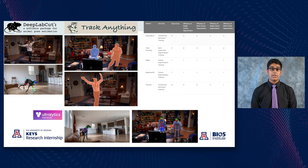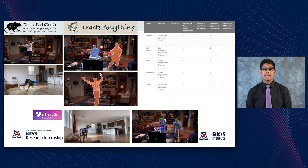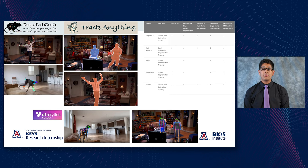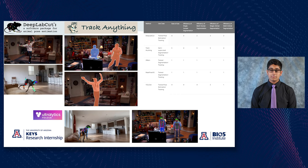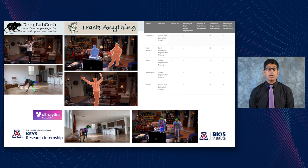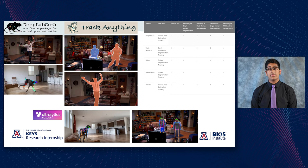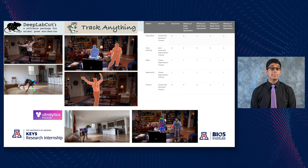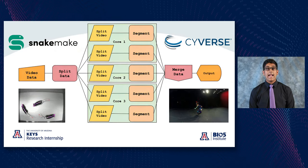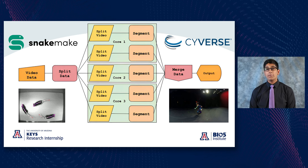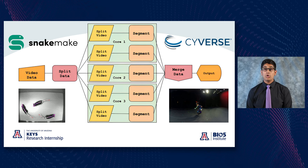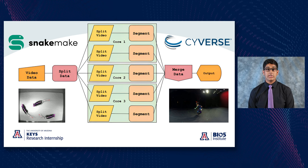I researched many different video segmentation methods such as DeepLabCut, Track Anything, and YOLO, and created a decision matrix rating each method on a scale of one to five after testing different types of videos. In the end, I was left with three methods: DeepLabCut, Track Anything, and YOLOv8. I then started working on a data pipeline that would take a long video, split it into 10 or 5-second chunks, segment those chunks separately, and process them on different CPU cores to allow for faster parallel computing.